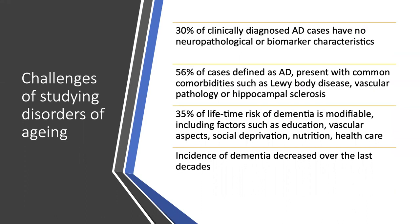A couple of facts about AD and why it is difficult to study. 30% of clinically diagnosed AD cases have no neuropathological or biomarker characteristics. 56% of cases defined as AD present with common comorbidities such as Lewy body disease, vascular pathology, or hippocampus sclerosis. What is also notable: 35% of lifetime risk of dementia is modifiable. So nutrition, good health care, managing vascular aspects, and education may modify the lifetime risk of dementia, delay age at onset, leading to decreased incidence of dementia over the last decades.